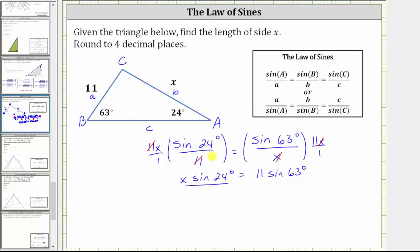Now to solve for x, we divide both sides by sine 24 degrees. Simplifying, sine 24 degrees divided by itself simplifies to one. So now we know x equals 11 sine 63 degrees divided by sine 24 degrees.